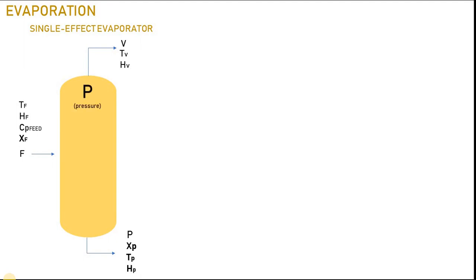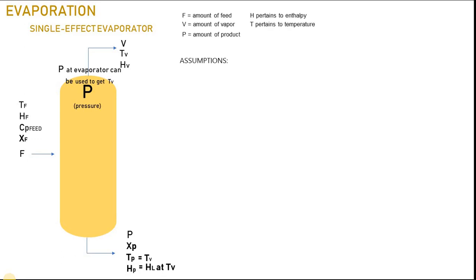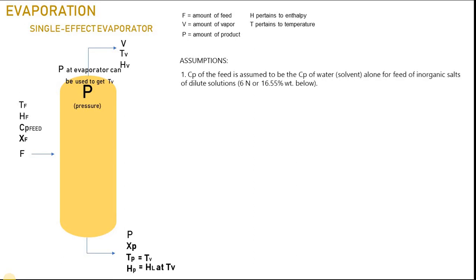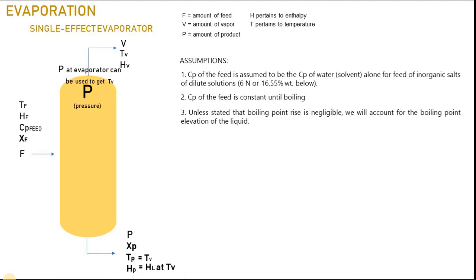The working pressure of the evaporator is defined and is denoted P. In solving evaporator problems, we have to make some assumptions to simplify our calculations. Please take note of the following assumptions because this will be our basis in solving. The heat capacity of the feed is assumed to be the heat capacity of the water in the feed alone, for feeds of inorganic salts or dilute solutions.